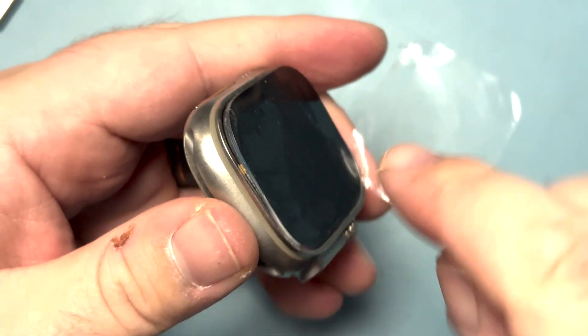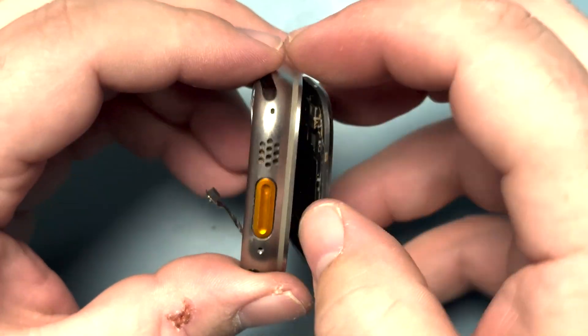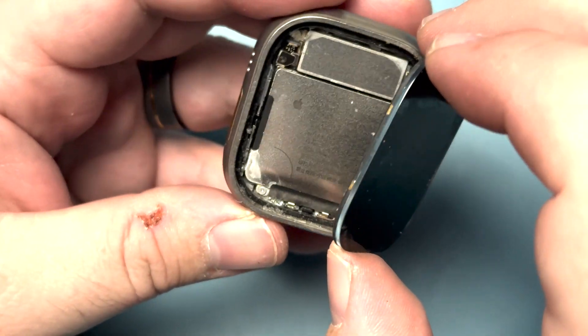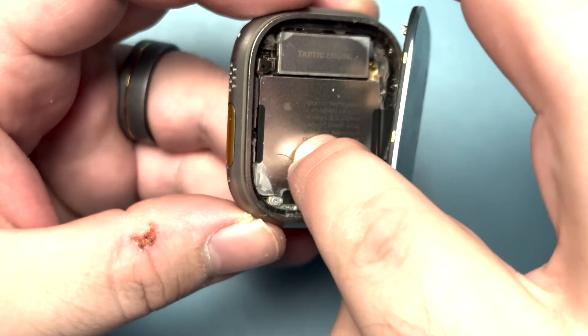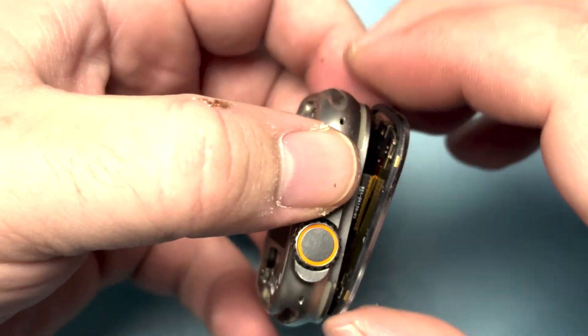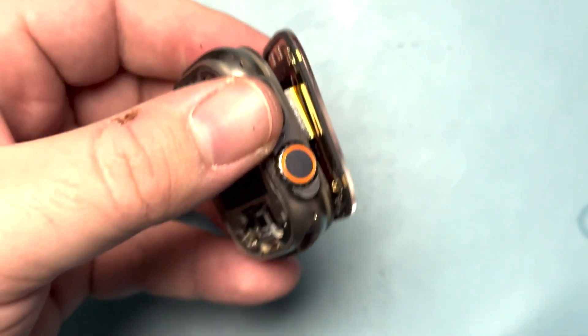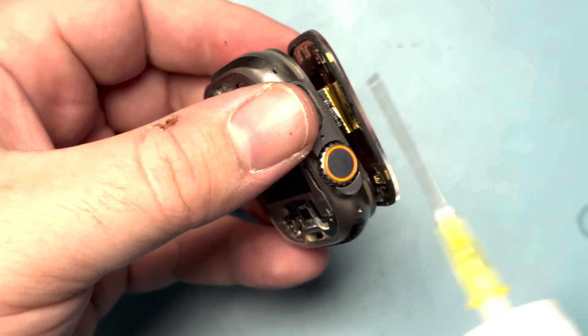I'll slice through the last side here. Now the screen is free and we can see already some more water damage. We have the battery. Flip the watch over and we're going to add some isopropyl alcohol to the flex here on the back of the display just to loosen it a little.